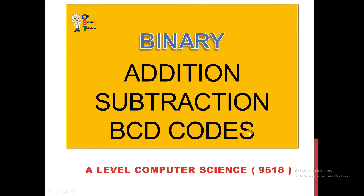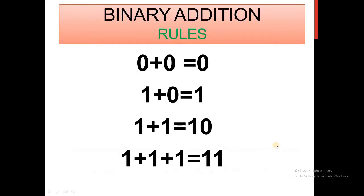First of all, let's see the addition of binary numbers, which is very easy. Binary numbers consist of only two digits, 0 and 1. There are some rules to consider when adding two binary numbers: 0 plus 0 equals 0, just like in the decimal system. 1 plus 0 equals 1. But 1 plus 1 equals 10. And 1 plus 1 plus 1 equals 11. Keep these rules in mind when adding binary numbers.